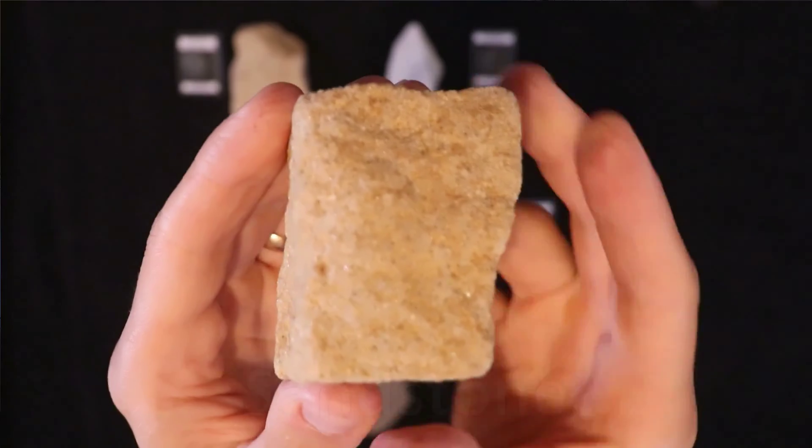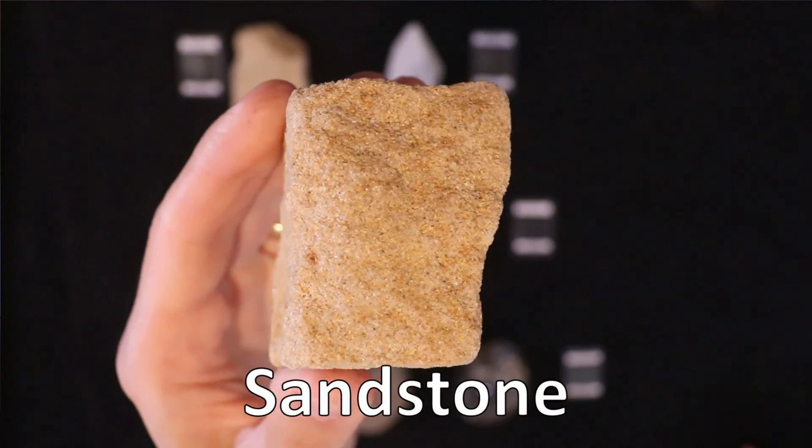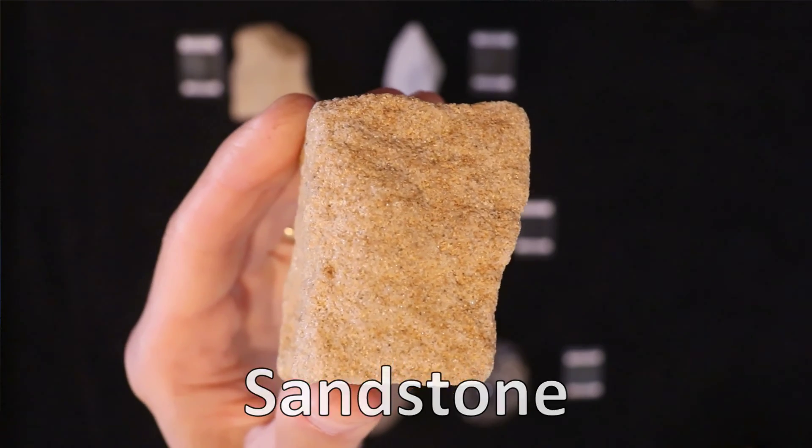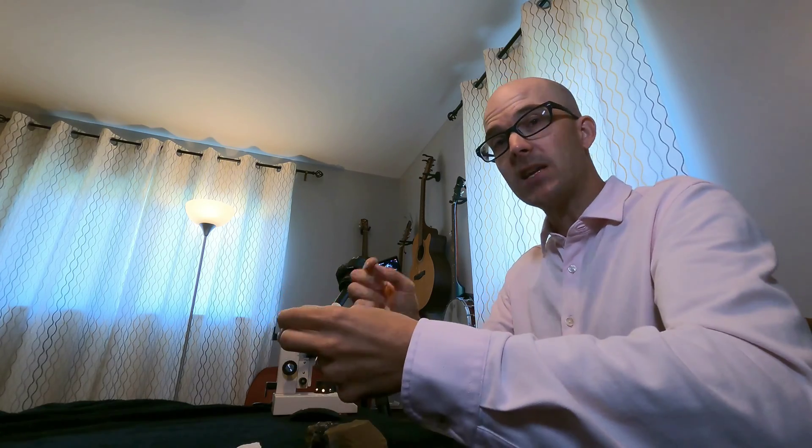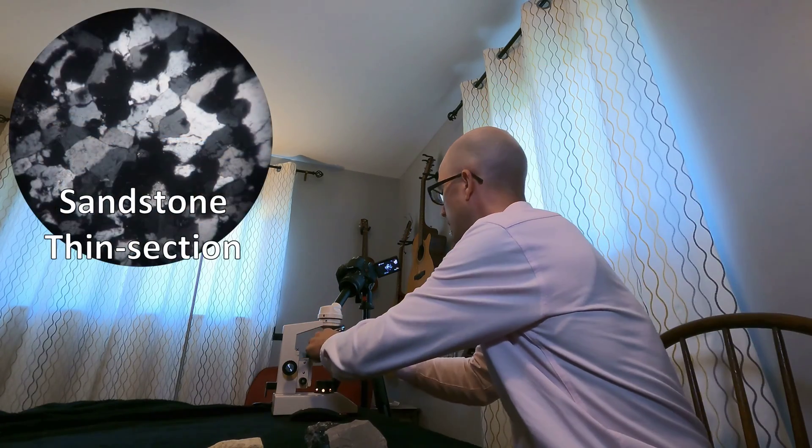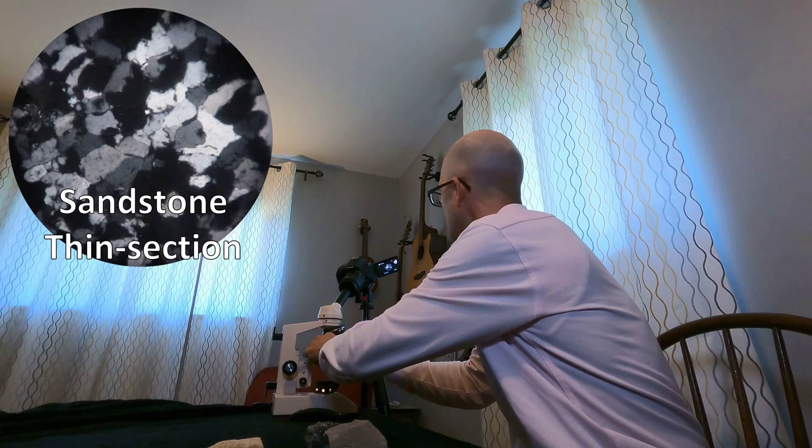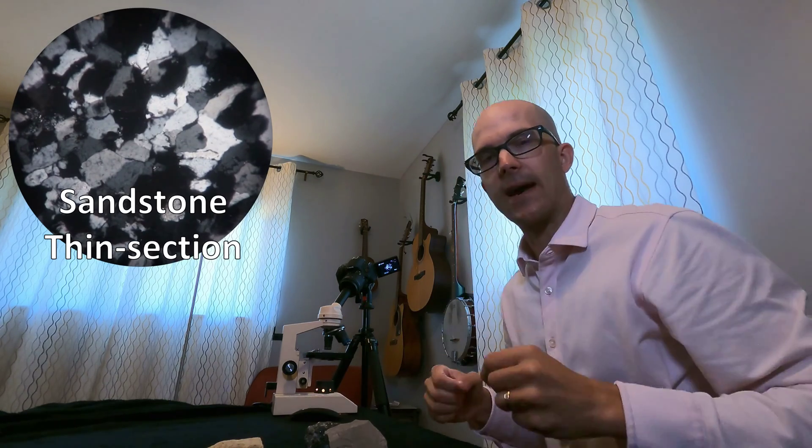Here's another example. This is sandstone. Like limestone, sandstone is also sedimentary. And it's made of sand particles that have been cemented together. Here is its thin section. You can see all those little grains of sand sort of glued together with cement.